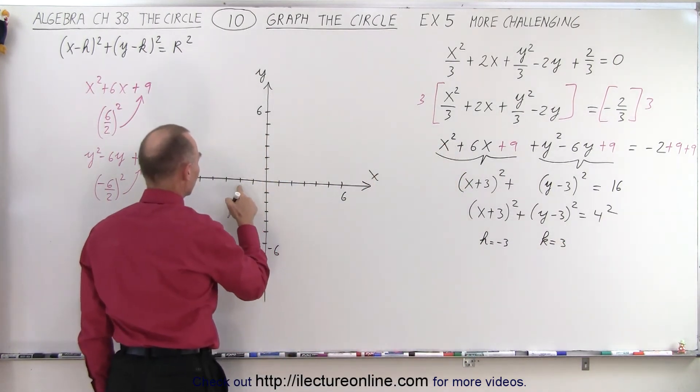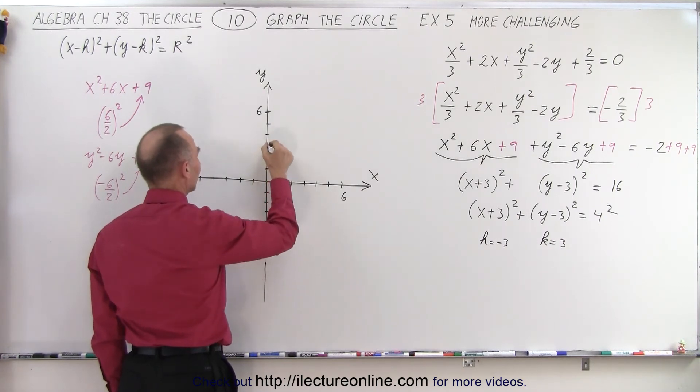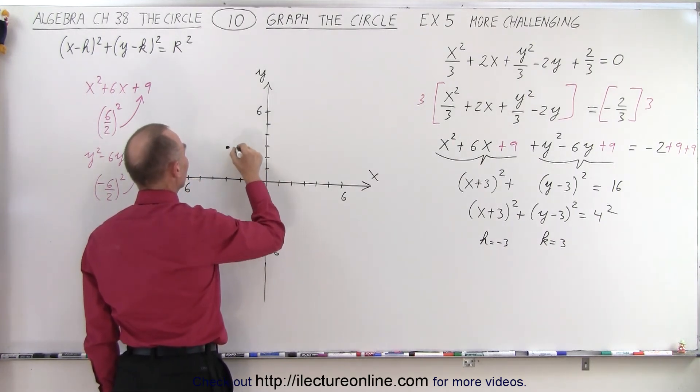So h negative 3, that's 1, 2, 3, that's over here. And k is positive 3, 1, 2, 3, that's over there. So where the 2 meet, that's going to be the center of the circle, negative 3 and 3.